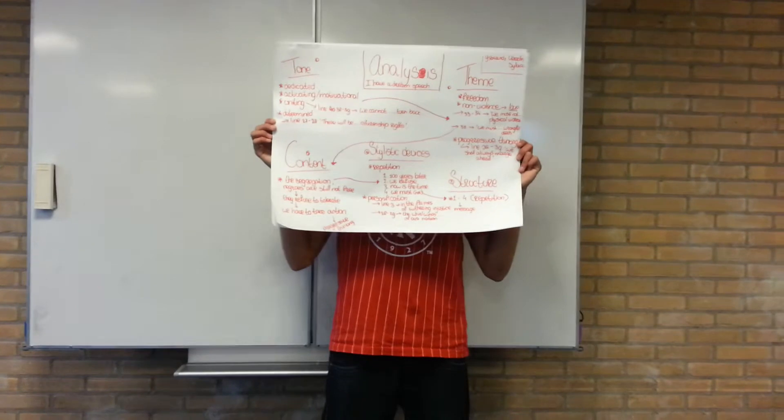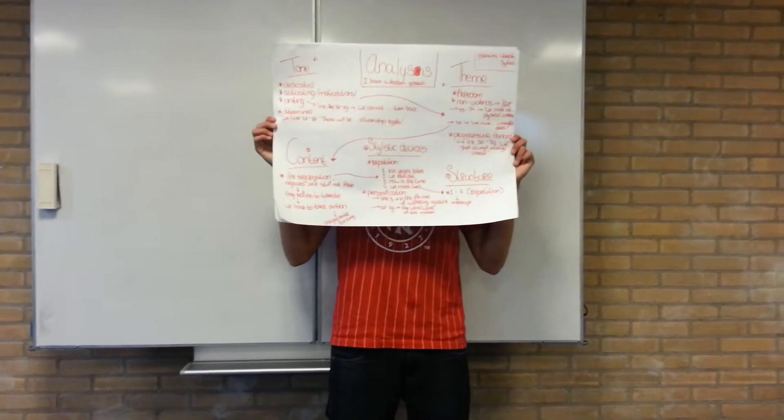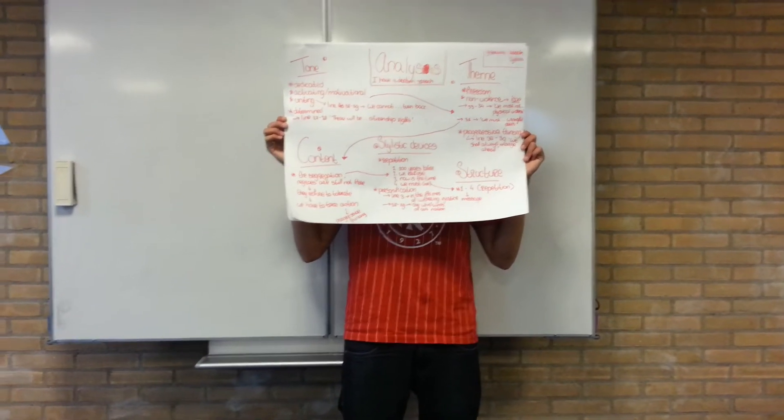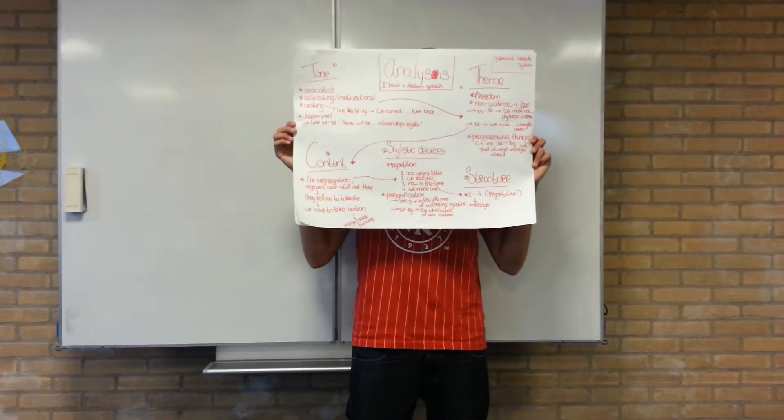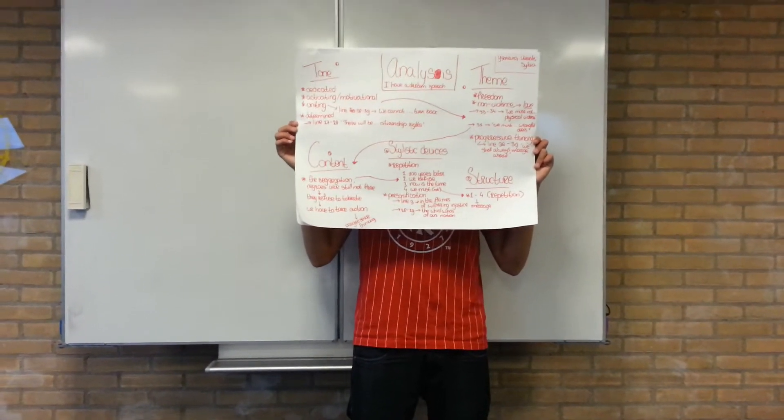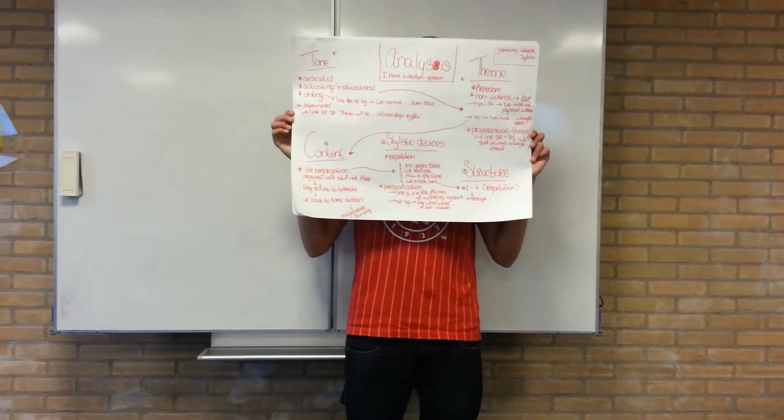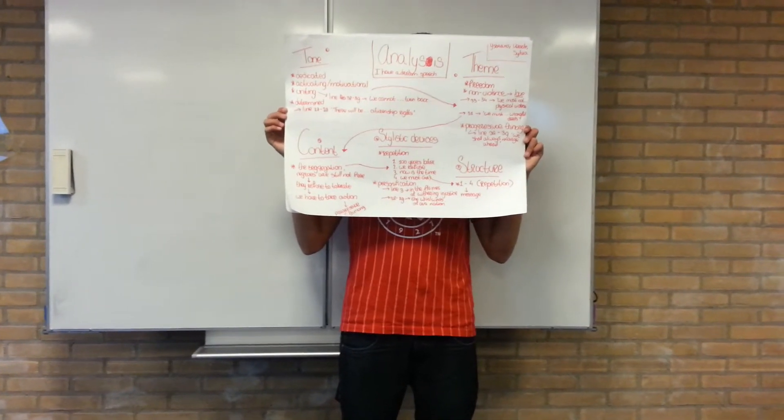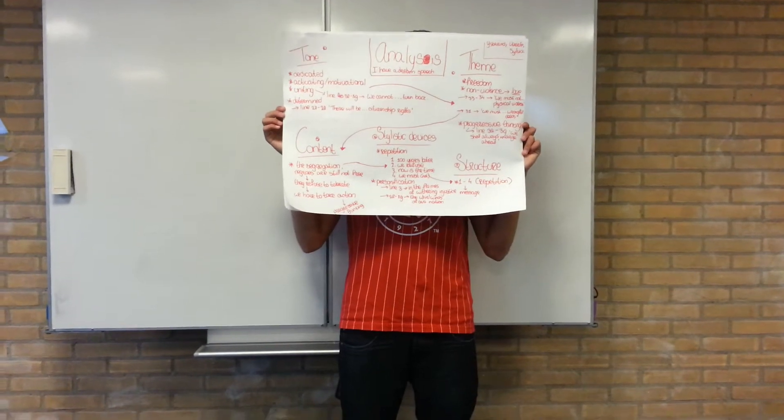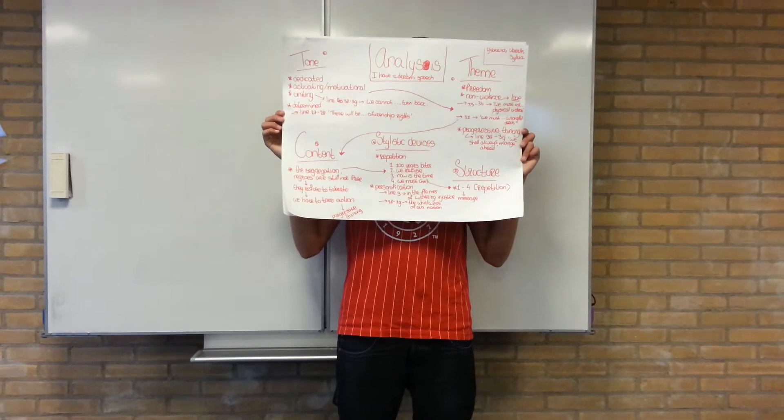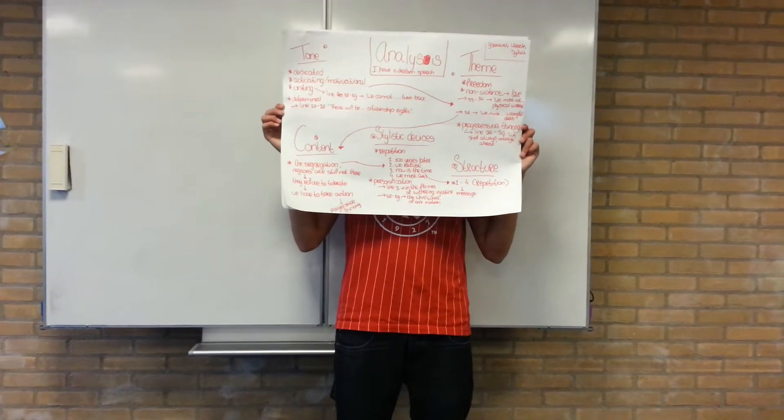The other line, it also says something like that is 31, which basically says: we must not be guilty of wrongful deeds. He says again that we should not use violence to get to our cause. And you can see that in the tone, he's really being dedicated, but he's doing that in a non-violent way.